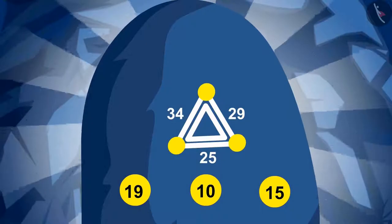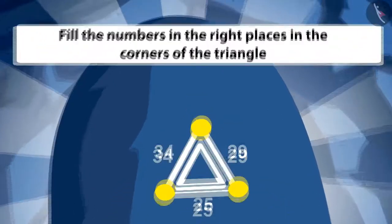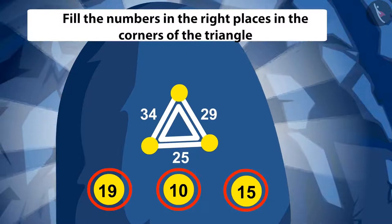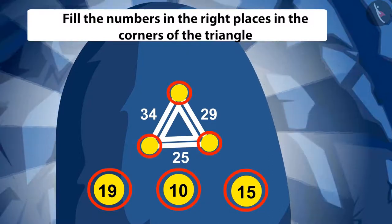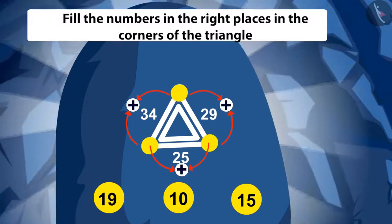Suddenly, Tufan can see this question above that mark. Fill the numbers in the right places in the corners of the triangle in such a way that the addition of the numbers in each of the two corners is equal to the number written in between them.